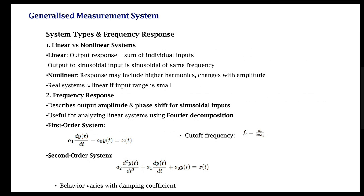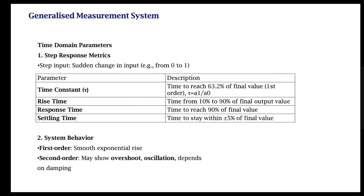We can also look at time-domain parameters for a step response — a sudden change in input. The time it takes for the system to reach 63.2% of the final value is called the time constant. The time it takes to go from 10% to 90% of the output is called the rise time. The total time to reach 90% is called the response time. The time for the system to stay within 5% of the final value is called the settling time. A first-order system shows a smooth rise, while a second-order system may show overshoots and oscillations depending on the damping value.